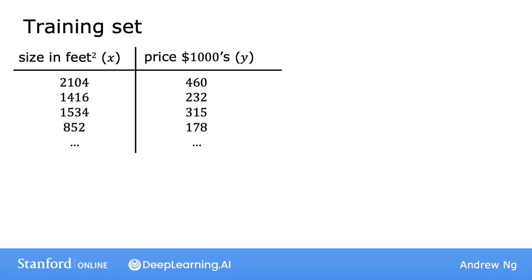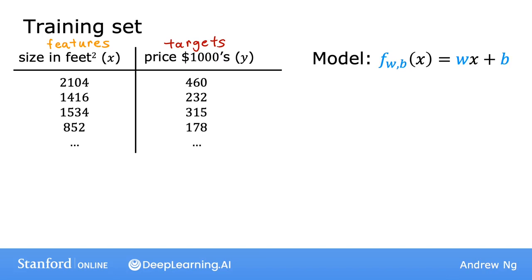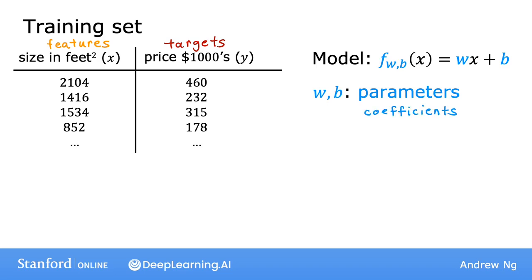Recall that you have a training set that contains input features x and output targets y. The model you're going to use to fit this training set is the linear function f_wb of x equals w times x plus b. The w and b are called the parameters of the model. In machine learning, parameters are the variables you can adjust during training in order to improve the model. Sometimes you'll also hear the parameters w and b referred to as coefficients or as weights.